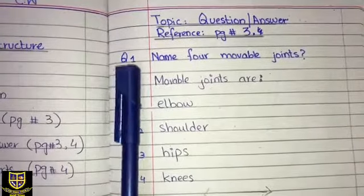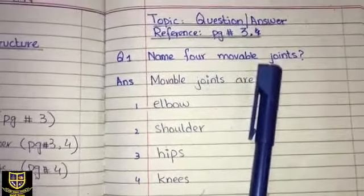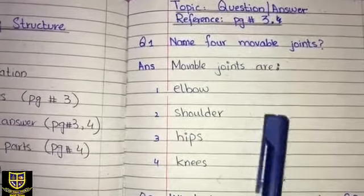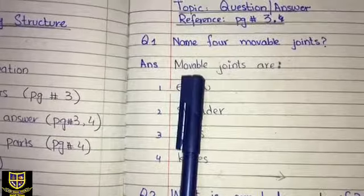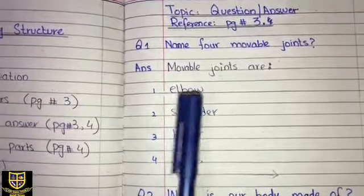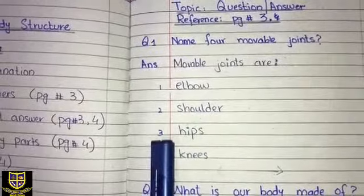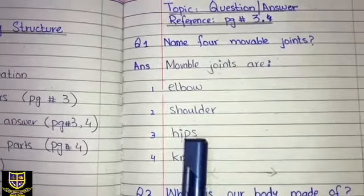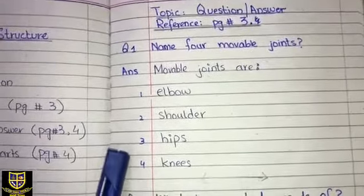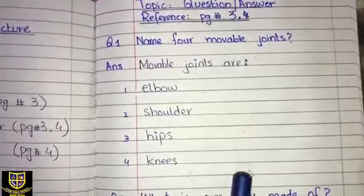Question number one: Name four movable joints. You have to write the names of four movable joints. The answer is: movable joints are — number one, elbow (E-L-B-O-W); number two, shoulder (S-H-O-U-L-D-E-R); number three, hips (H-I-P-S); and number four, knees (K-N-E-E-S). So these are the four movable joints. This is your question number one answer. Draw the ending line.